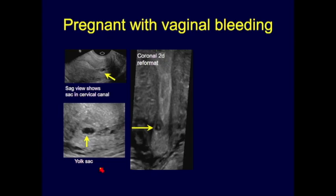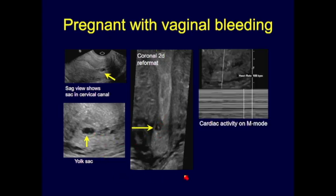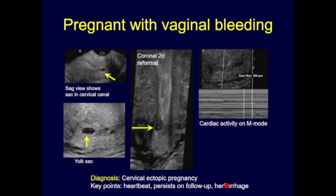A different pregnant patient with vaginal bleeding: a low-lying sac located in the endocervical canal, below the internal os on coronal 2D reformat, with a yolk sac and M-mode cardiac activity — this is a cervical ectopic pregnancy. If there's a heartbeat within the embryo, it must be implanted at that site. This is often confused for spontaneous abortion in progress, but cervical ectopics will persist. It's important to diagnose early, because a D&C can lead to significant hemorrhage — there is no muscle in the endocervical wall to stop the bleeding.